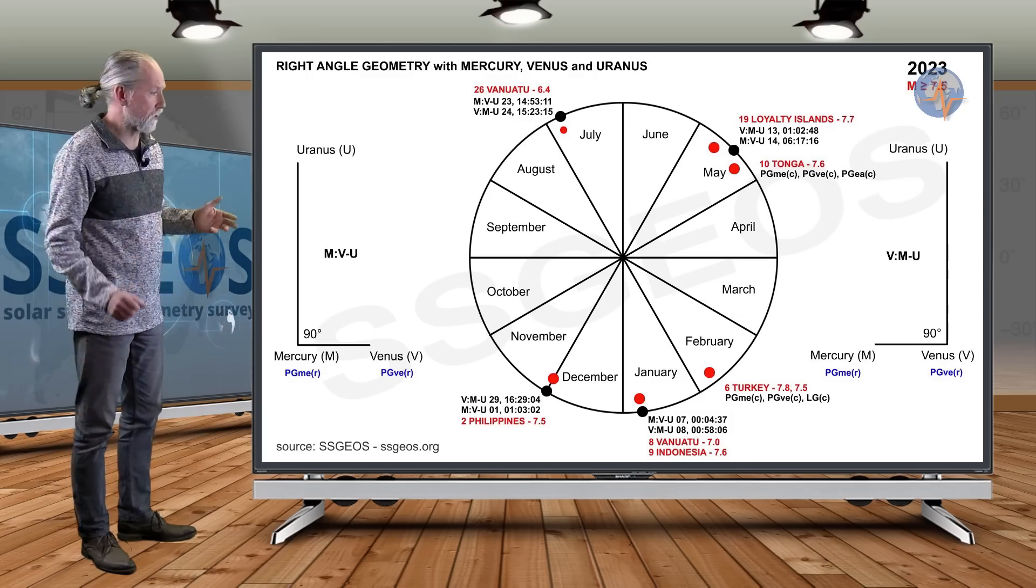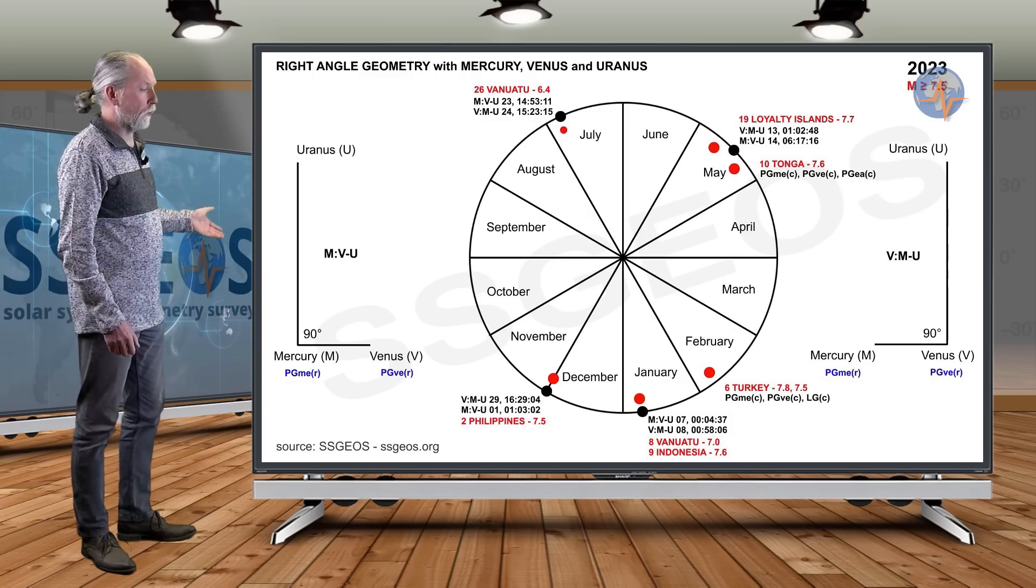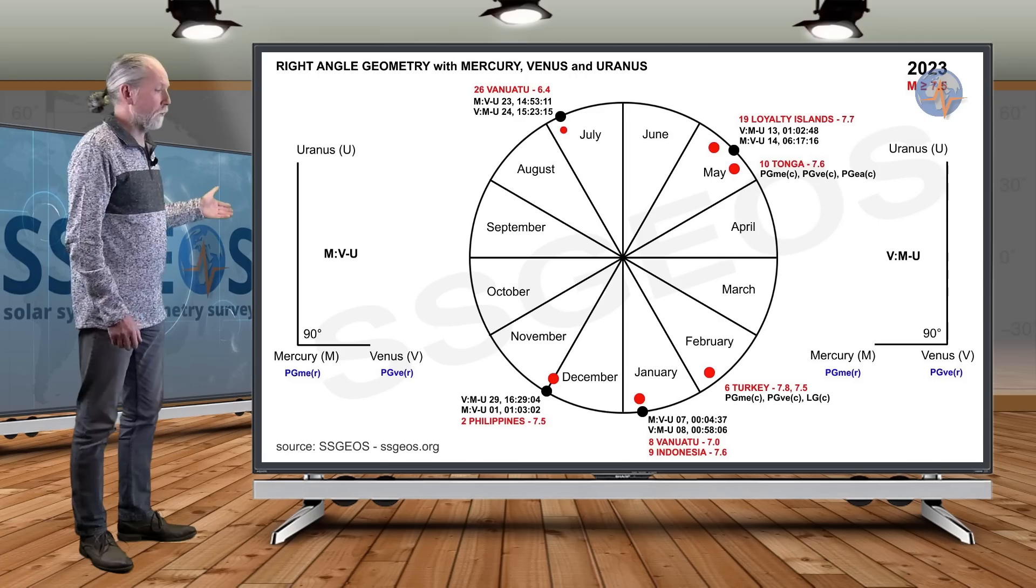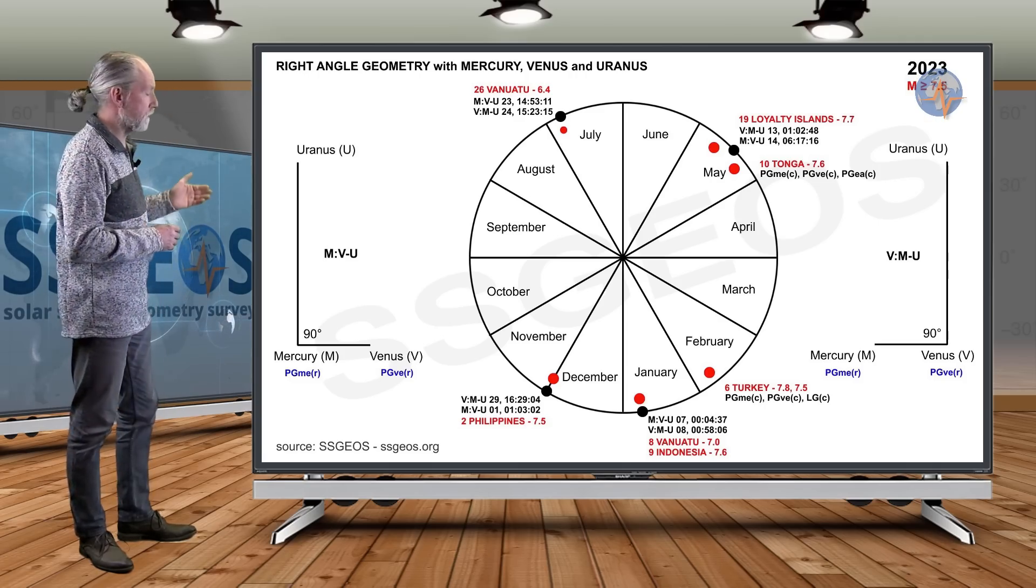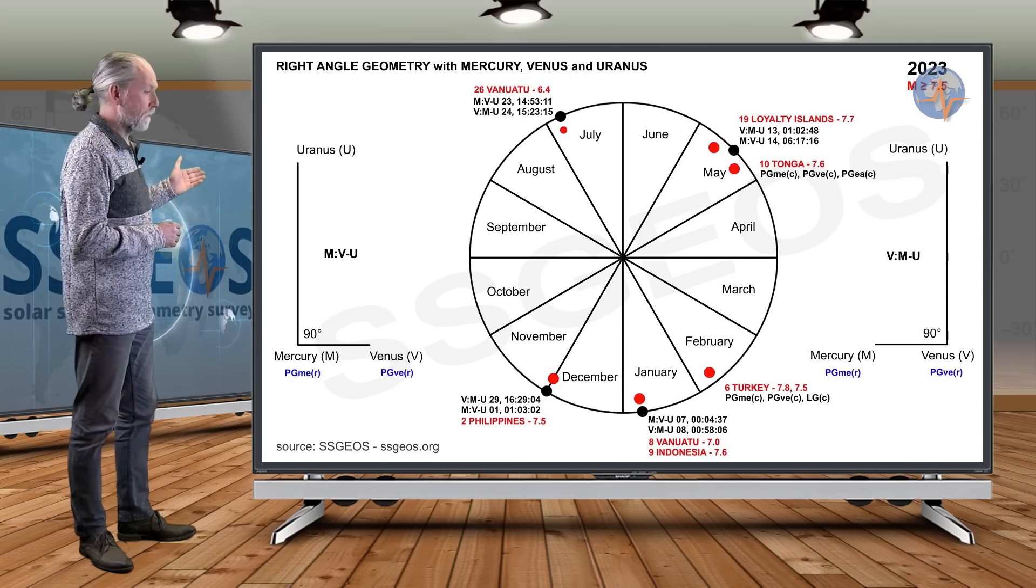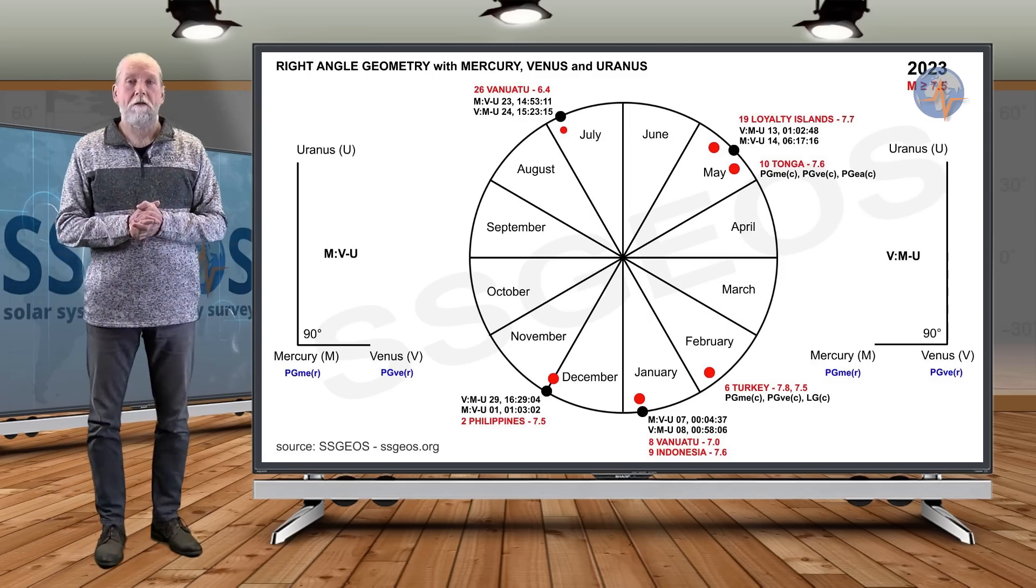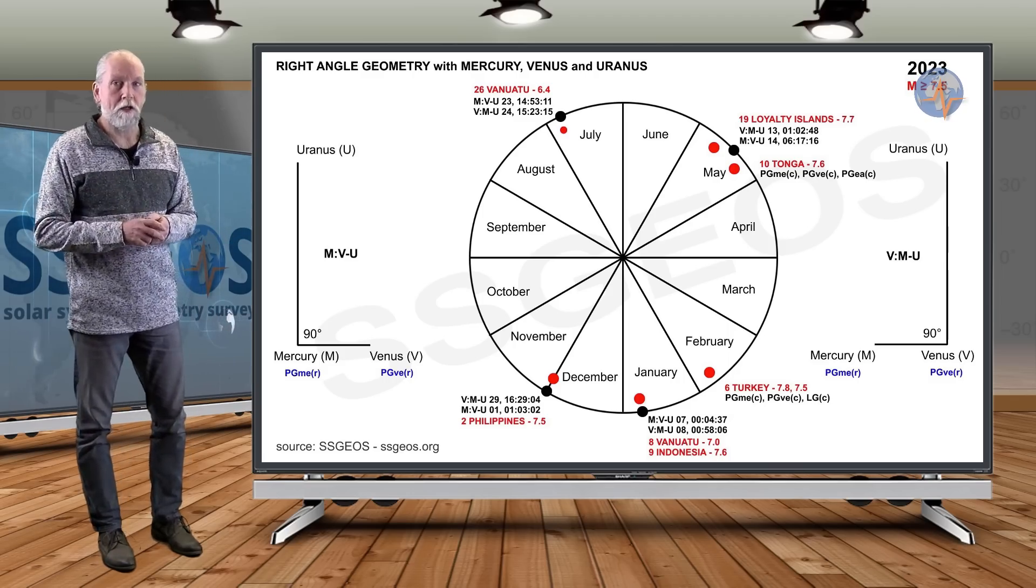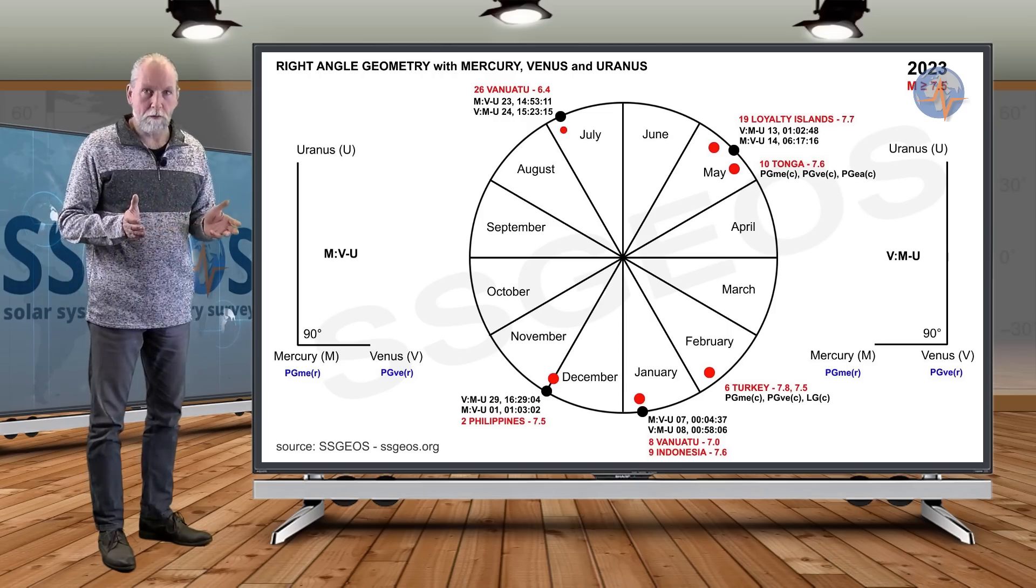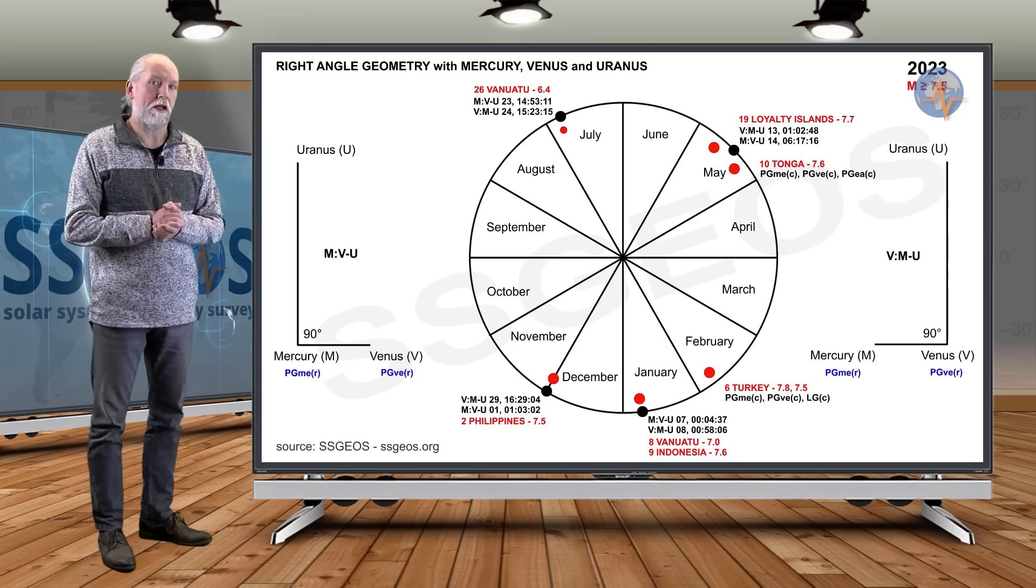Then also the end of November, early December, on 29th November and 1st December, we also had this particular right-angle geometry with Mercury and Venus. And we had the Philippines, a 7.5. Three out of five, and that counts. There's this obvious relationship, and it's not just 2023, but it is recent. And it's a perfect example of what this geometry actually can do.